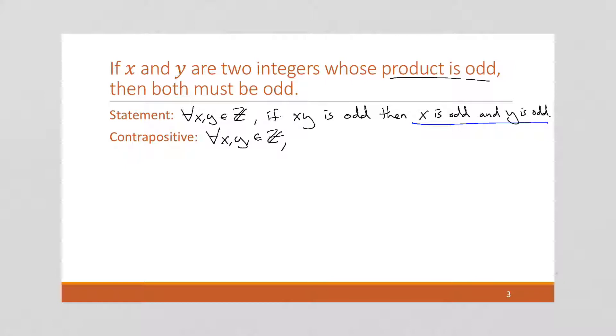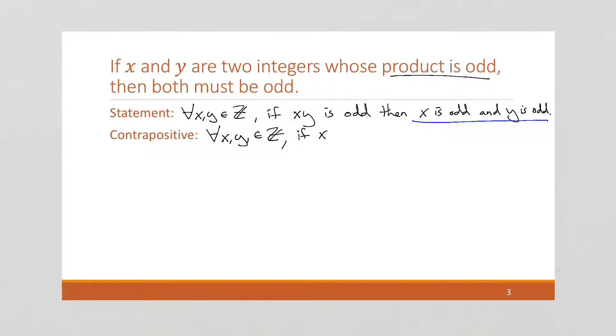Okay, so we want to do the negation of that second part, which is if x is even or y is even, then we want to do the negation of this first part, then xy is even. Right, and again, I'm going straight to even. I could say xy is not odd. But the obvious conclusion from that that we've talked about earlier in this class is that that means it's even. So I've just sort of skipped a step and jumped straight to even. Now let's do our proof by contraposition.